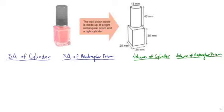Since the composite object is made up of two three-dimensional objects, the surface area will be calculated twice — once for the cylinder and once for the rectangular prism. The same applies to volume; we need to calculate the volume of the cylinder and the volume of the rectangular prism.